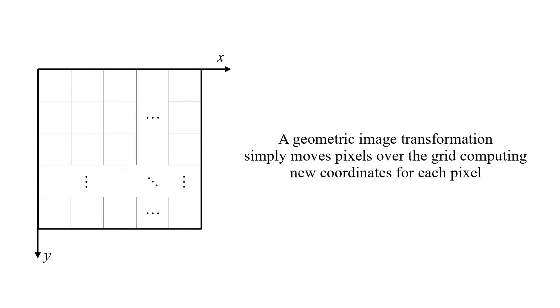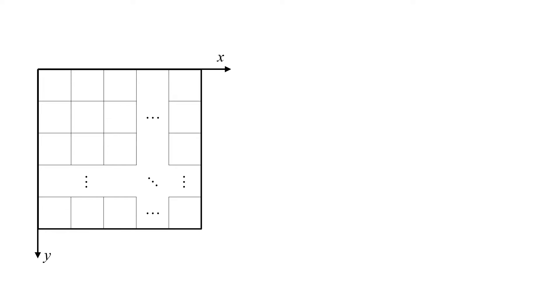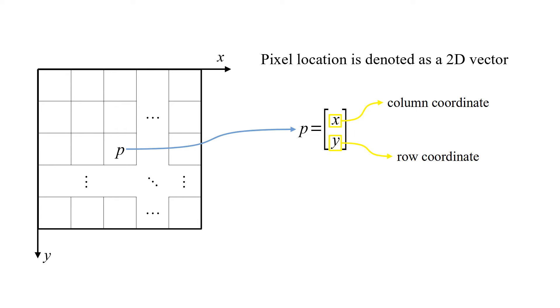A geometric image transformation simply moves pixels over the grid, computing new coordinates for each pixel. Pixel location is denoted as a 2D vector. X is column coordinate and Y is row coordinate.